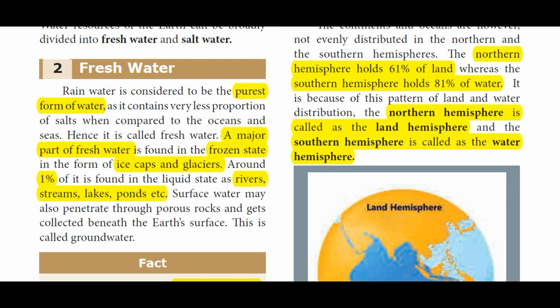Rain water is the purest form of water. Among ocean water, sea water, rain water, and lake water — rain water is the purest form. The major part of fresh water is found in a frozen state. Of the less than 3% fresh water, most is in ice caps and glaciers.